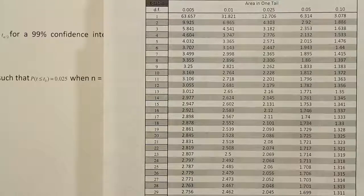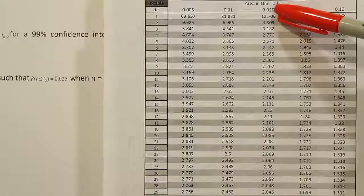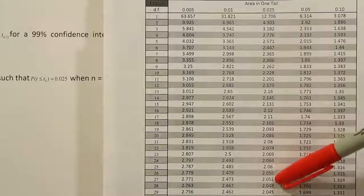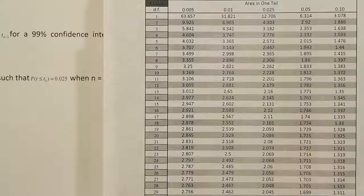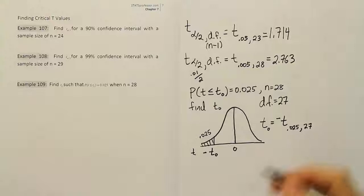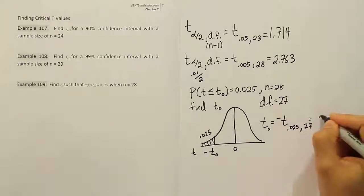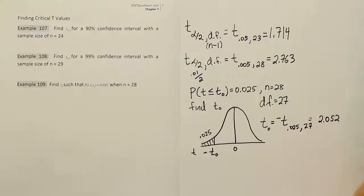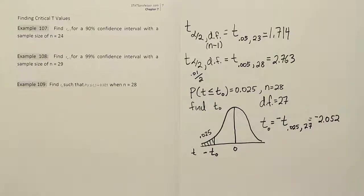Looking up 0.025 with 27 degrees of freedom in the t-table, we find 2.052. Since t₀ is on the left-hand side of the curve, the answer is negative 2.052.